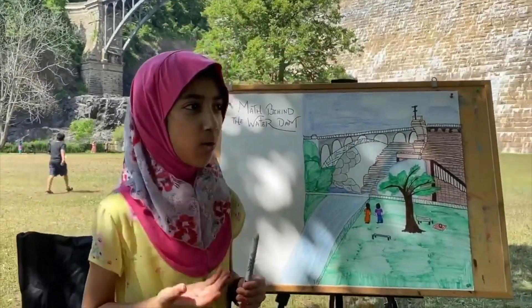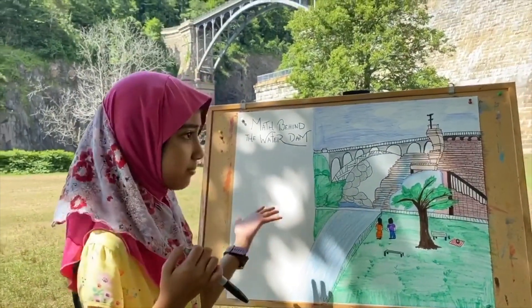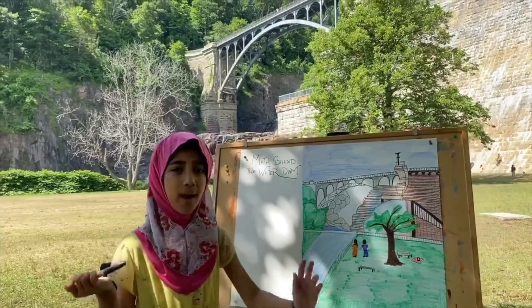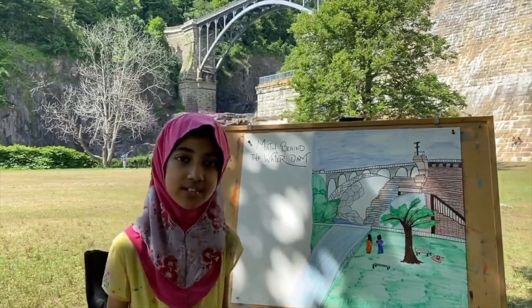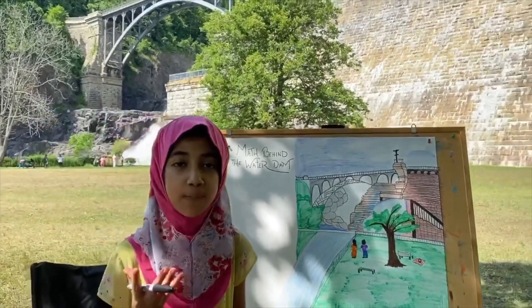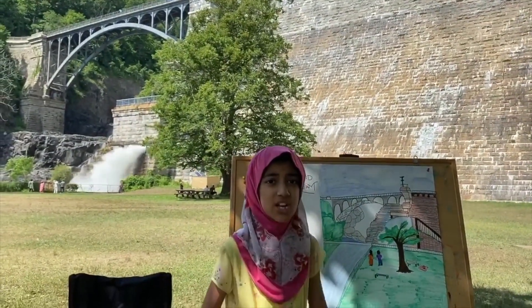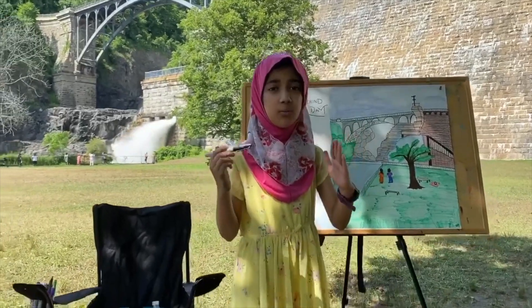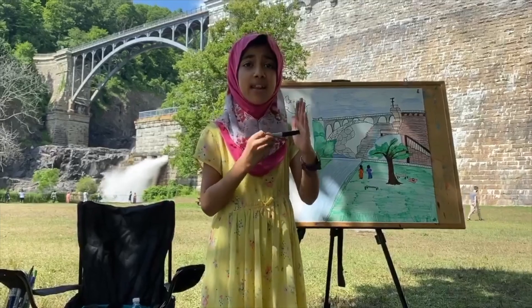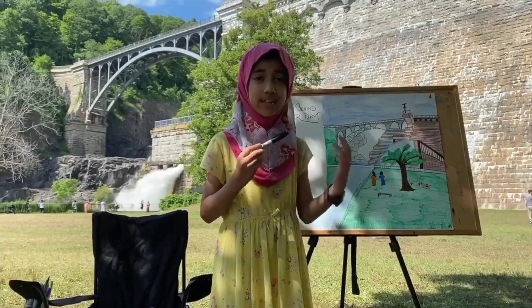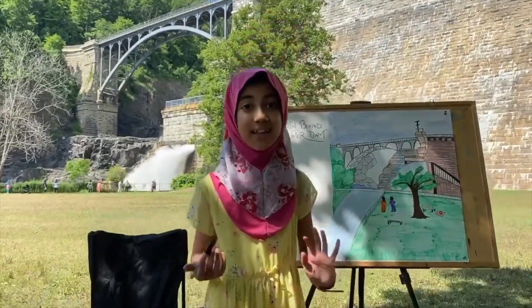Today I'm going to show you the math behind a river dam. You might think, why do we need math to figure out how to build a dam? Well, engineers need it because they need to figure out the pressure of the water behind the dam wall, so that when the water pressure hits the dam, the dam won't break, won't collapse, and all the water won't come flooding into the area. That's why they need the math.